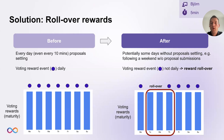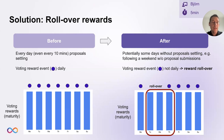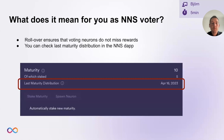Essentially, the rollover ensures that you as someone who votes with your neuron do not miss any rewards. You can also check the last maturity distribution in the NNS app — if the date of the last distribution is more than one day in the past, then a rollover is currently taking place. That's all from my side. Back to you, Jan.